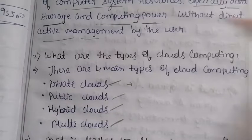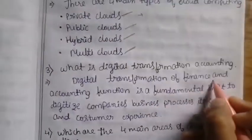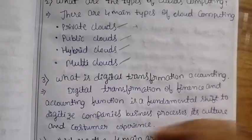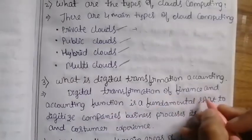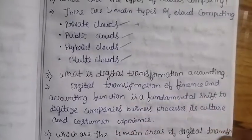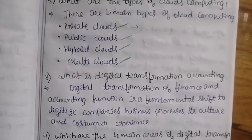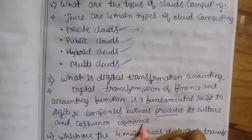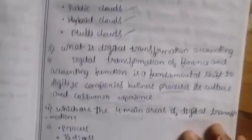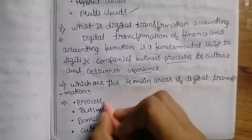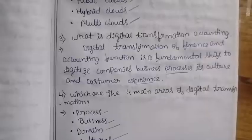These are the major types of cloud computing. Next, what is digital transformation in accounting? The digital transformation of the finance and accounting function is a fundamental shift to digitize a company's business processes, its culture, and customer experience. The four main areas of digital transformation are: business process, business domain, and culture.